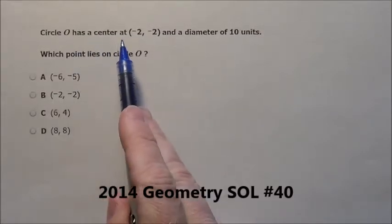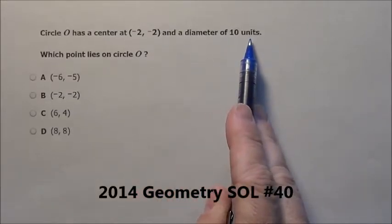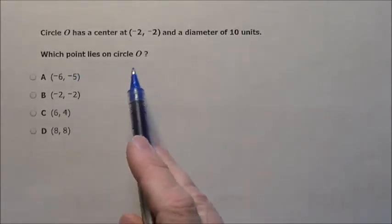Problem number 40. It says circle O has a center at negative 2, negative 2 and a diameter of 10 units. Which point lies on circle O?